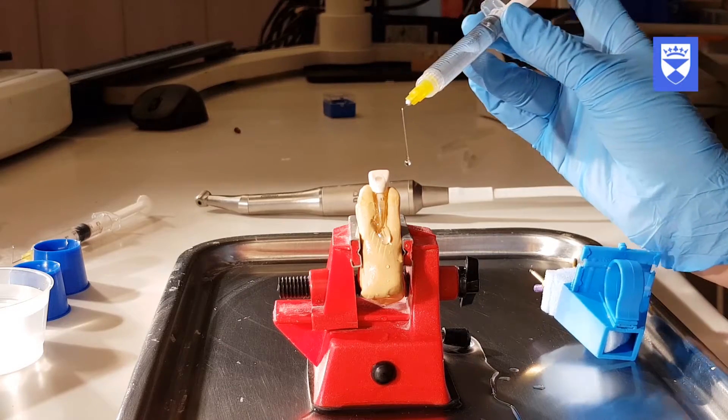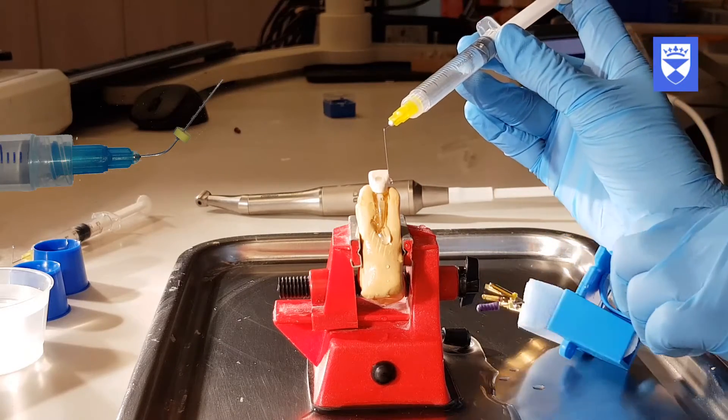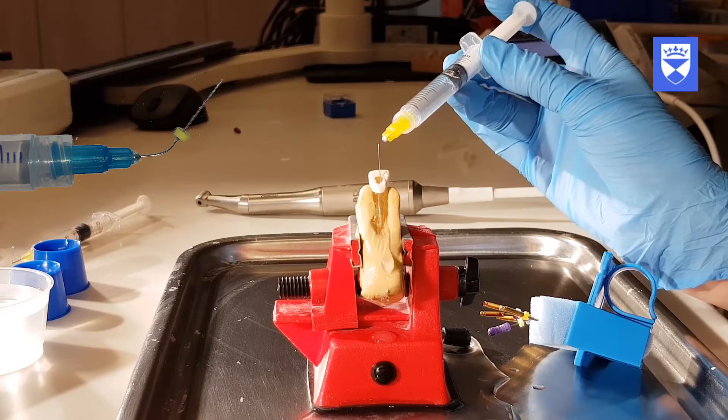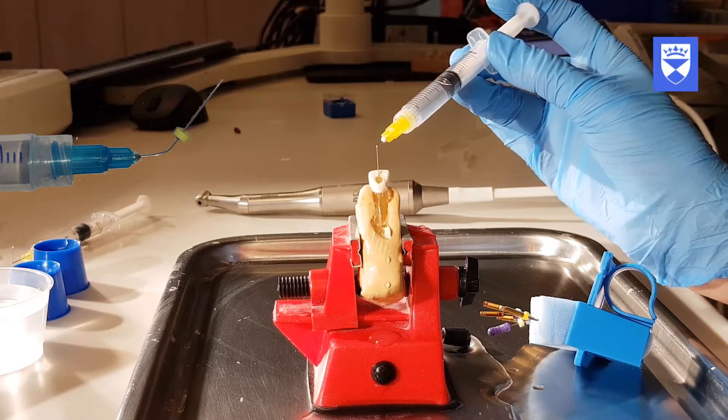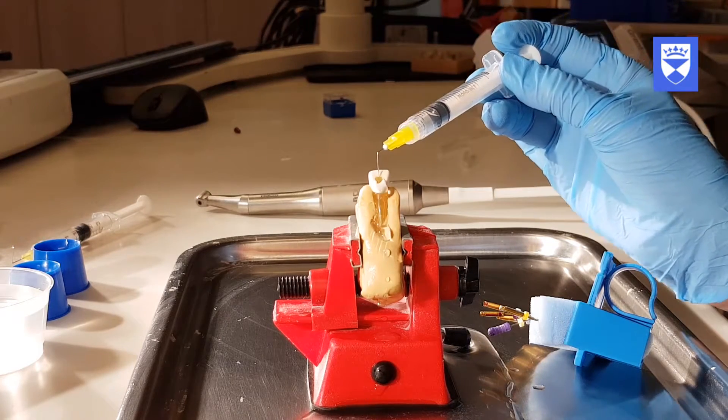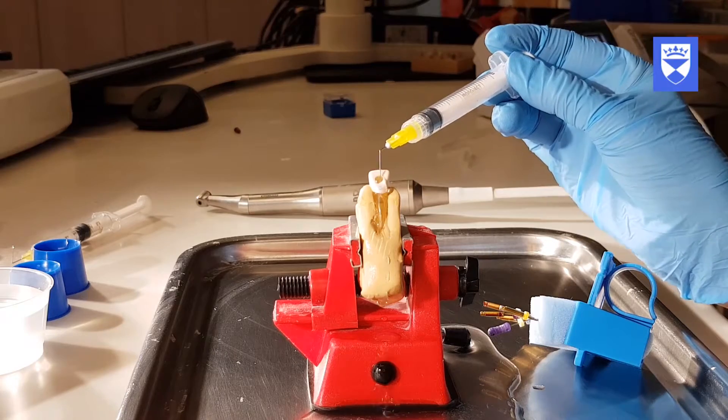The canal should be irrigated with 3ml of sodium hypochlorite, recapitulated with a size 10 flexofile and irrigated again before using the next file. Remember to keep the tip moving when irrigating to prevent it from locking in place.